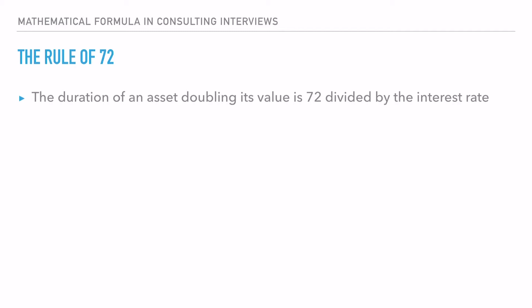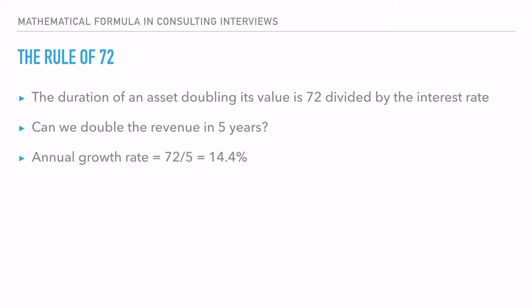One bonus question I've seen in an interview: at the end of a case, the interviewer asks whether doubling the client's revenue in five years is a practical goal. Using the rule of 72, the required annual growth rate would be 72 divided by 5, which equals 14.4%. You can then compare this against the company's past performance and general market trends to assess whether this goal is realistic.